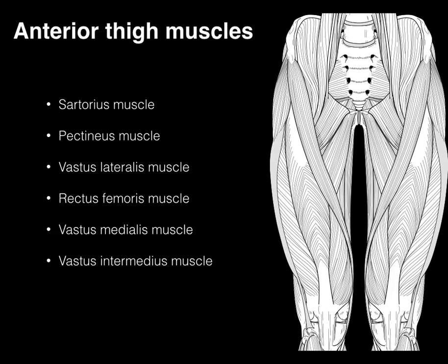Here are the anterior thigh muscles: sartorius, pectineus, and then our four quads. Our focus is going to be on the sartorius and the quads.